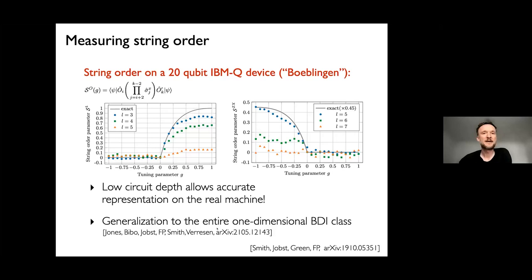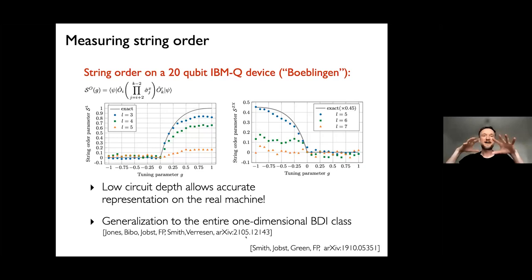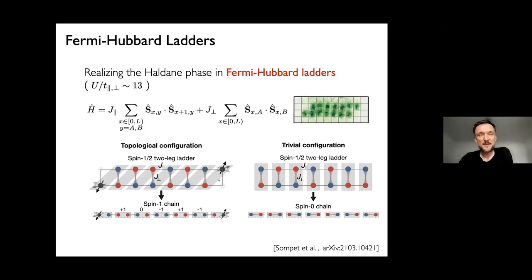In more recent work, we showed that these ideas can be generalized to the entire BDI class of topological phases. So we have a large space with many different topological phases, and if we stay on a skeleton of this space, we can construct exact matrix product states and consequently exact circuits to explore these phase diagrams.